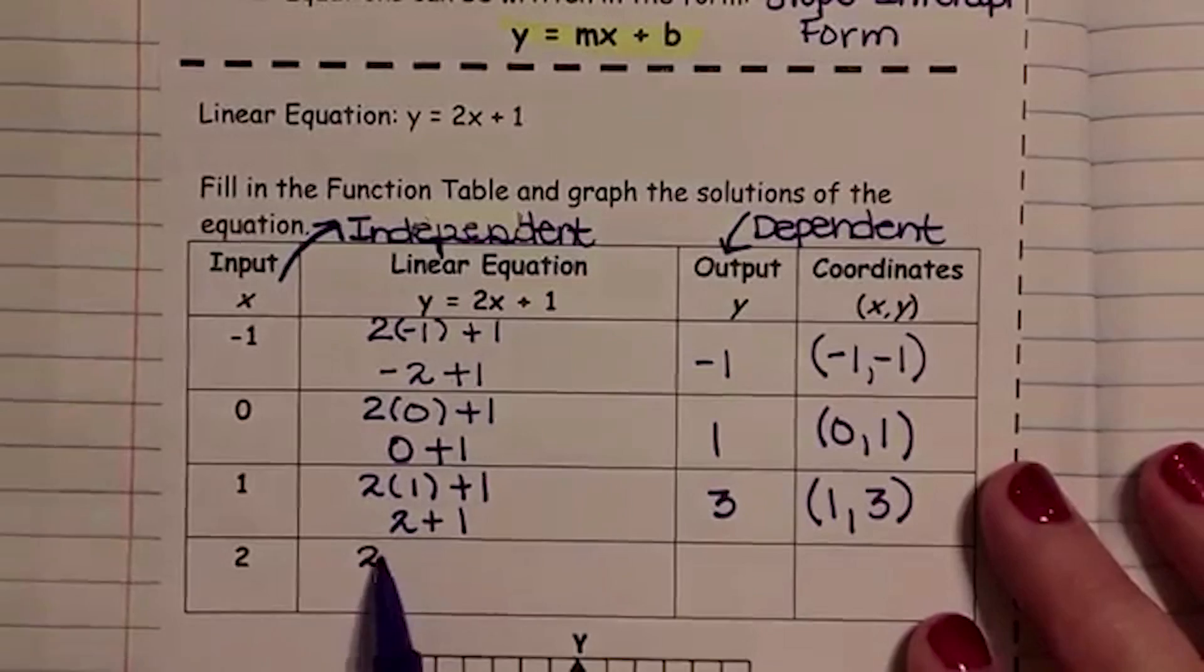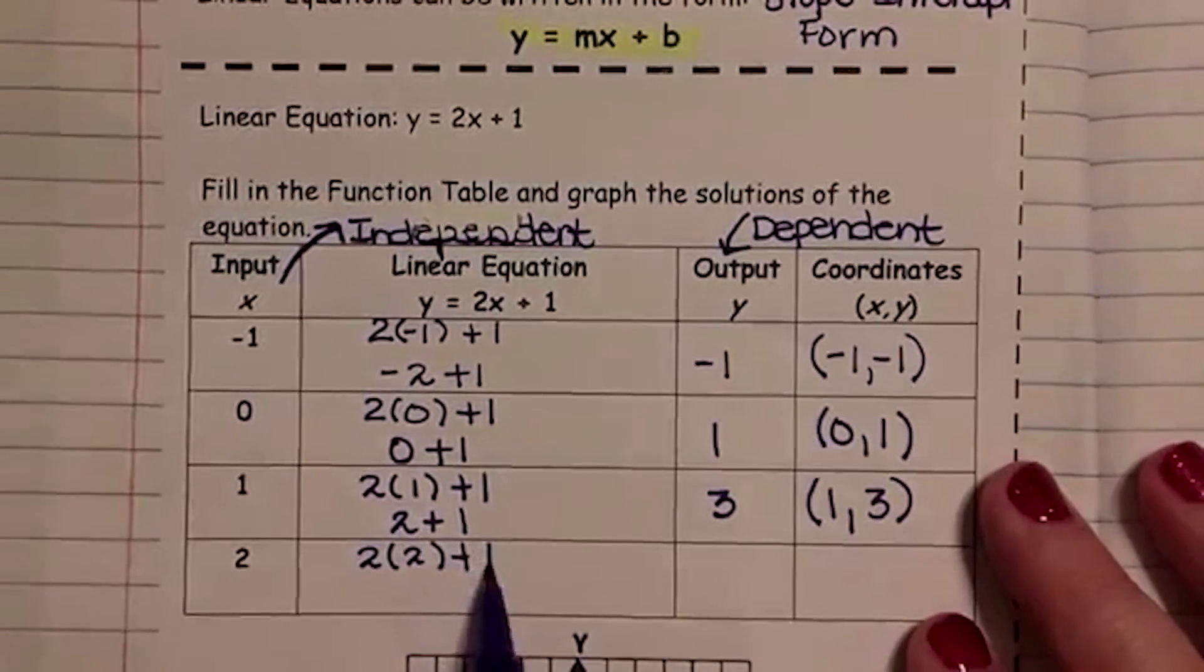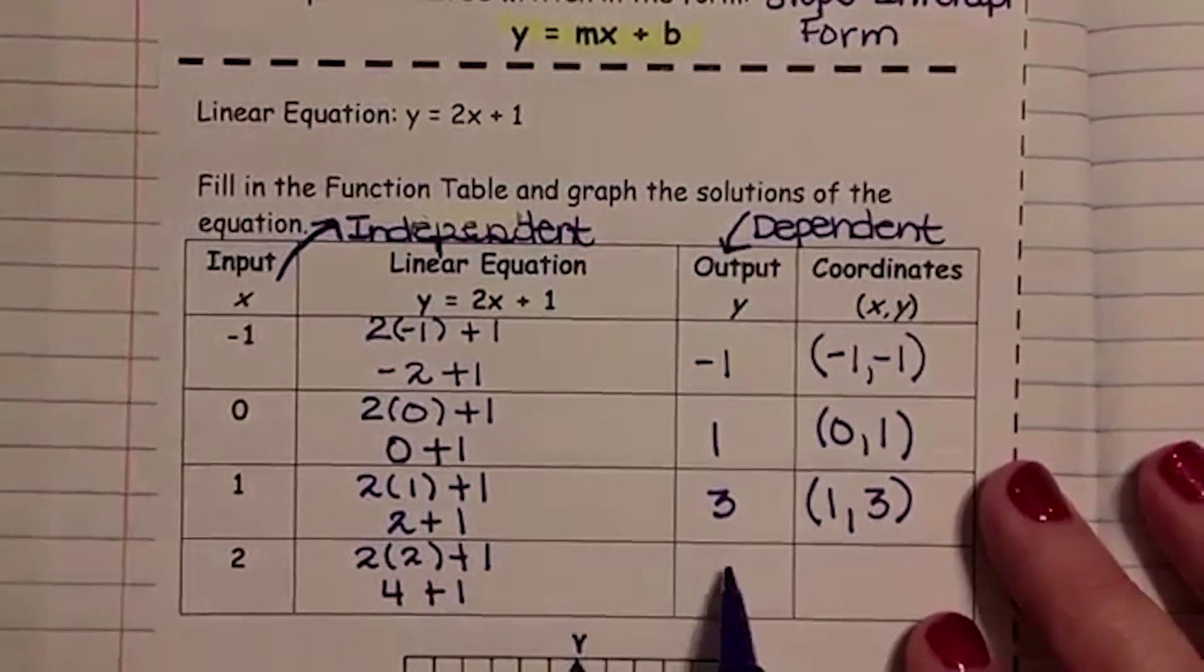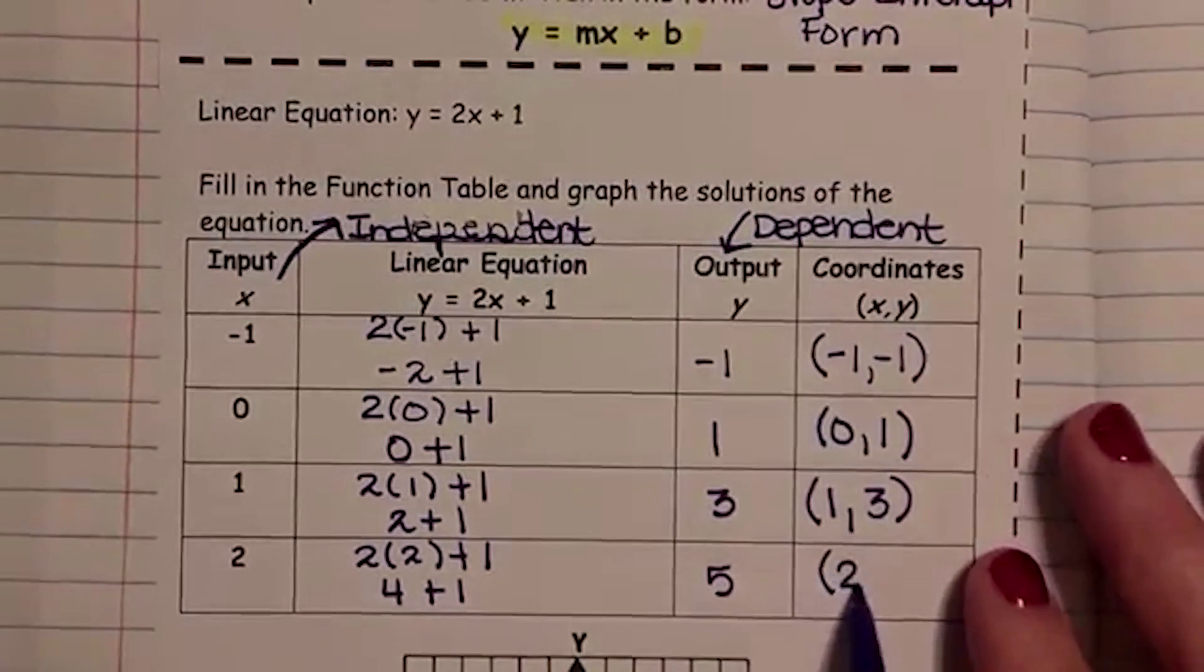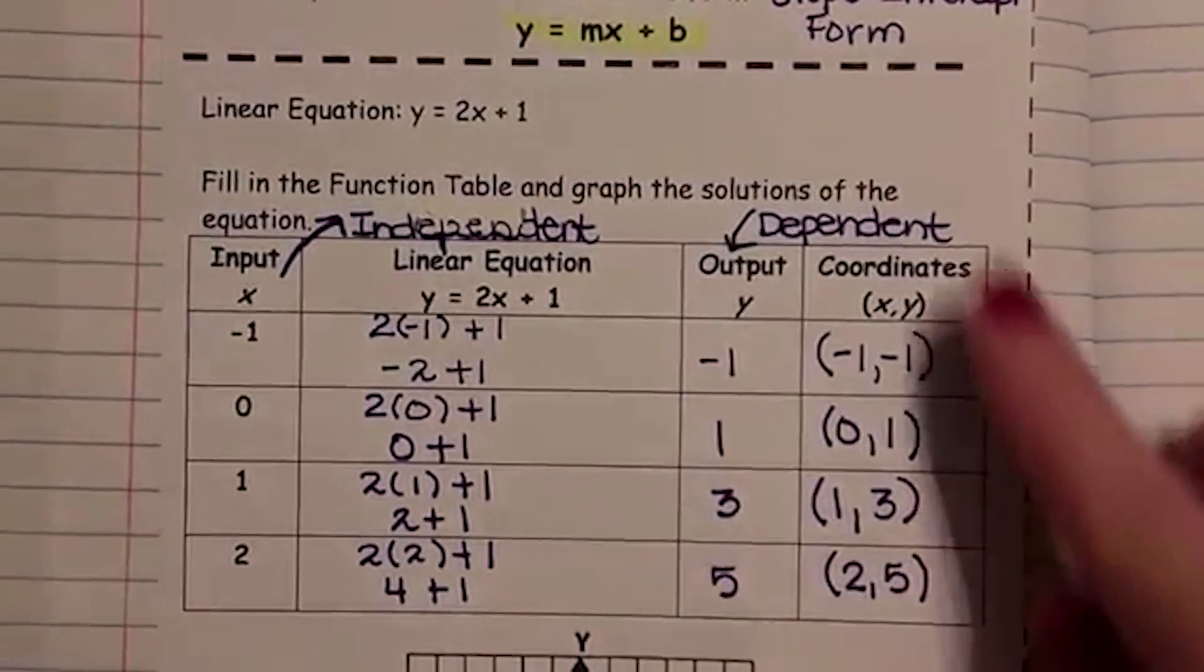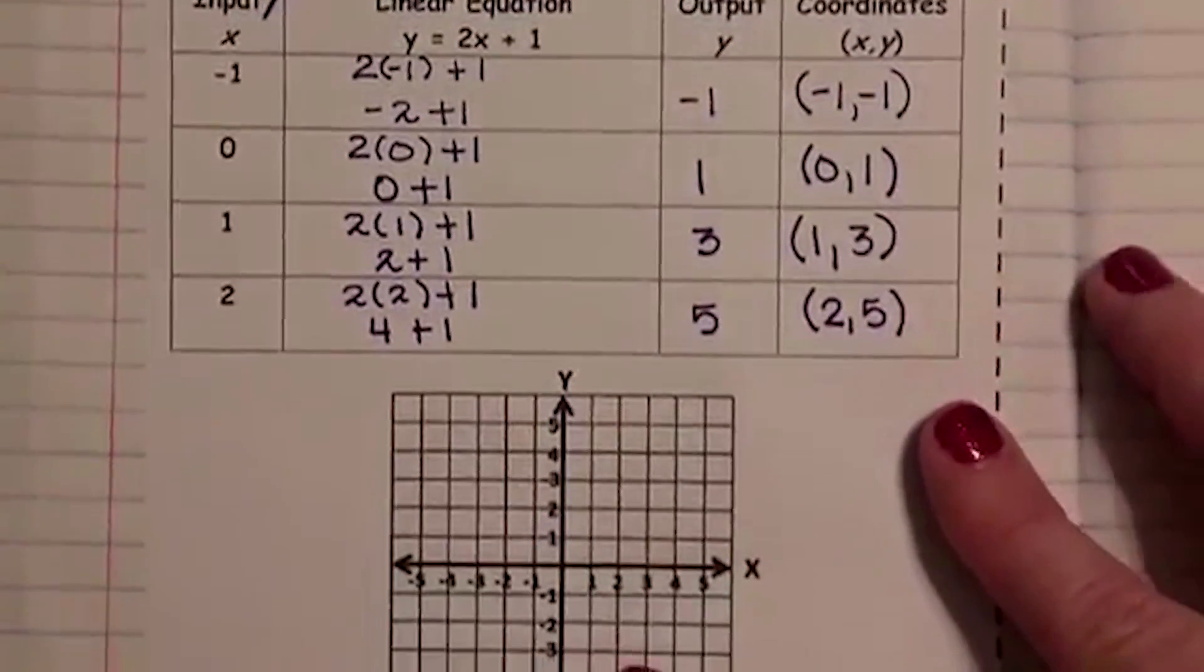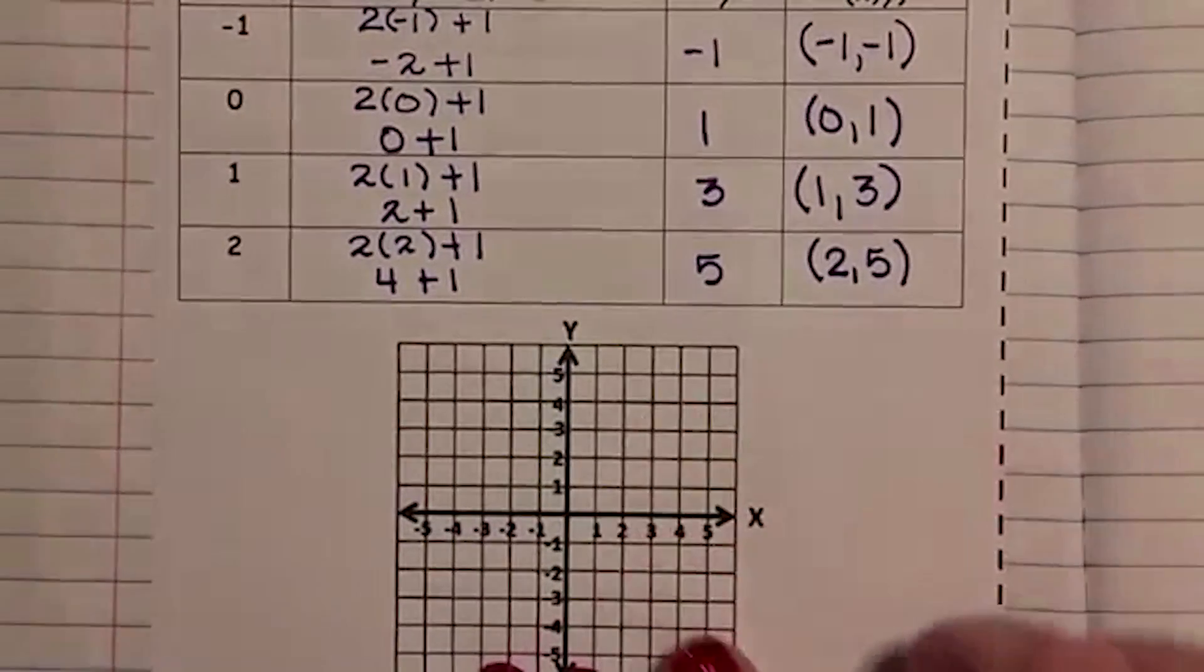And our last, 2 times 2 plus 1. 2 times 2 is 4. 4 plus 1 is 5. Our last coordinate. We're going to use those coordinates, and we're going to graph them on the coordinate plane below.